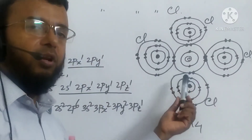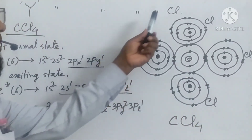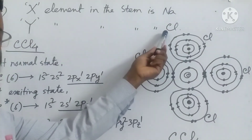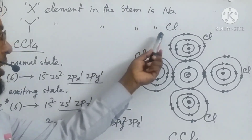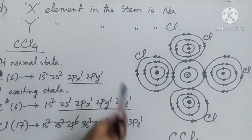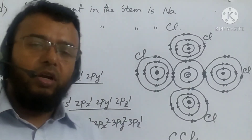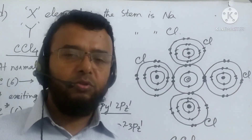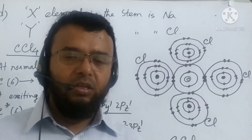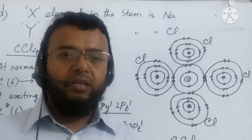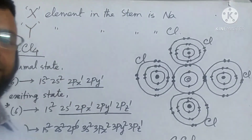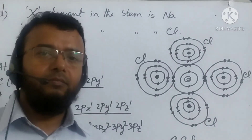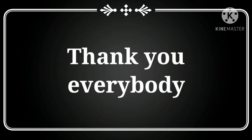We have seen that sodium, being a metal, forms only ionic compounds, while chlorine, being a non-metal, forms both ionic and covalent compounds. I have shown examples and explained. Today I have shown you two creative questions. All of you please must write them, learn them, and take preparation accordingly. Thank you everybody.